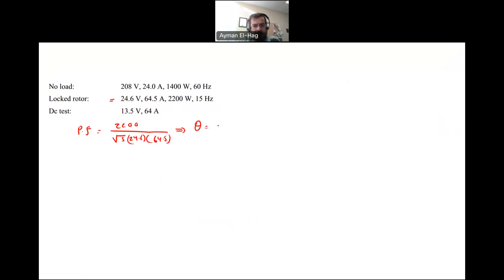This is the total power factor. From this, you'll get theta, which is cosine inverse of 2200 divided by root 3 of 24.6 times 64.5. This gives me a total angle of 36.82 degrees.